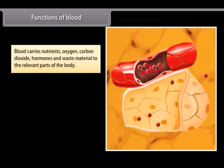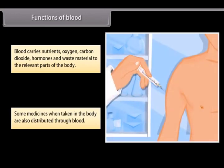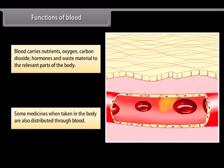Functions of blood. Blood carries nutrients, oxygen, carbon dioxide, hormones and waste material to the relevant parts of the body. Some medicines when taken in the body are also distributed through blood.